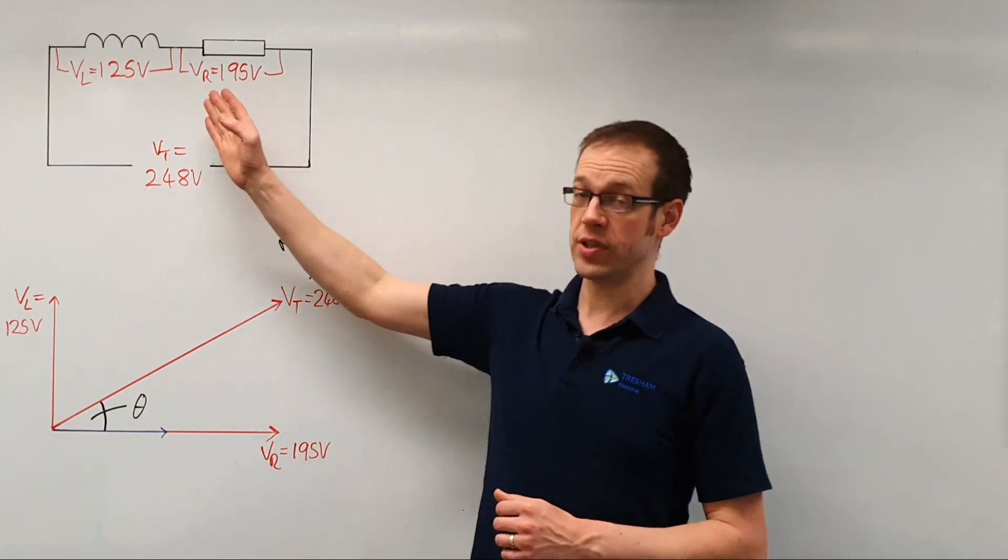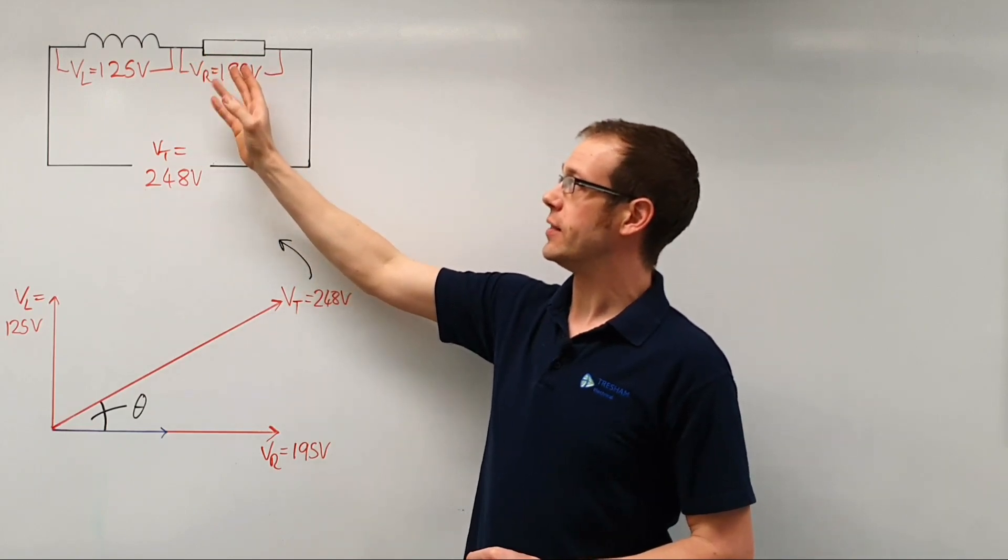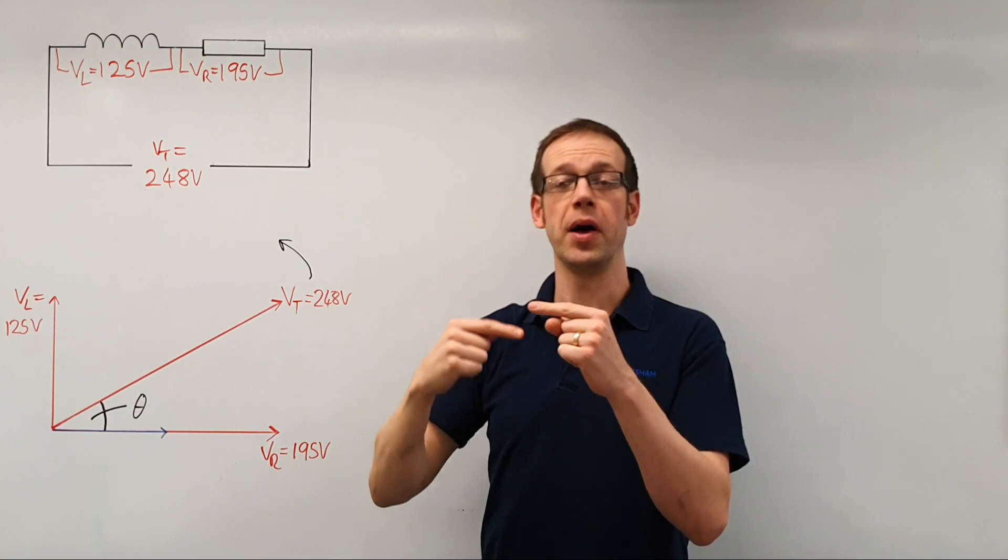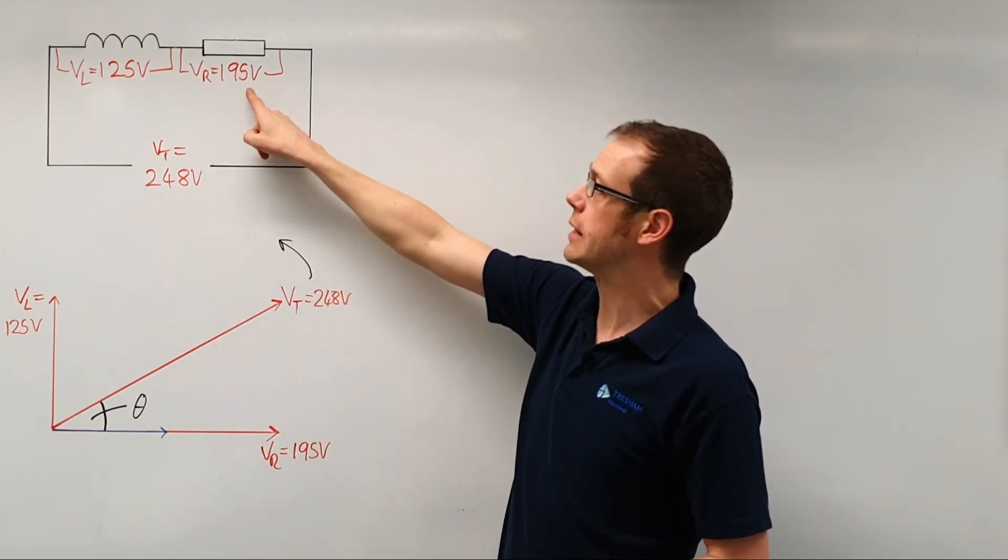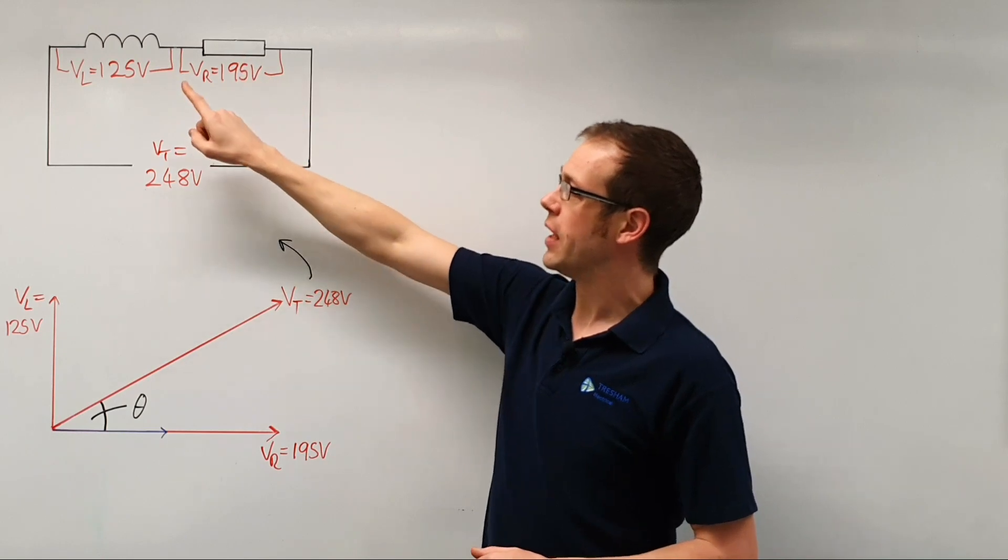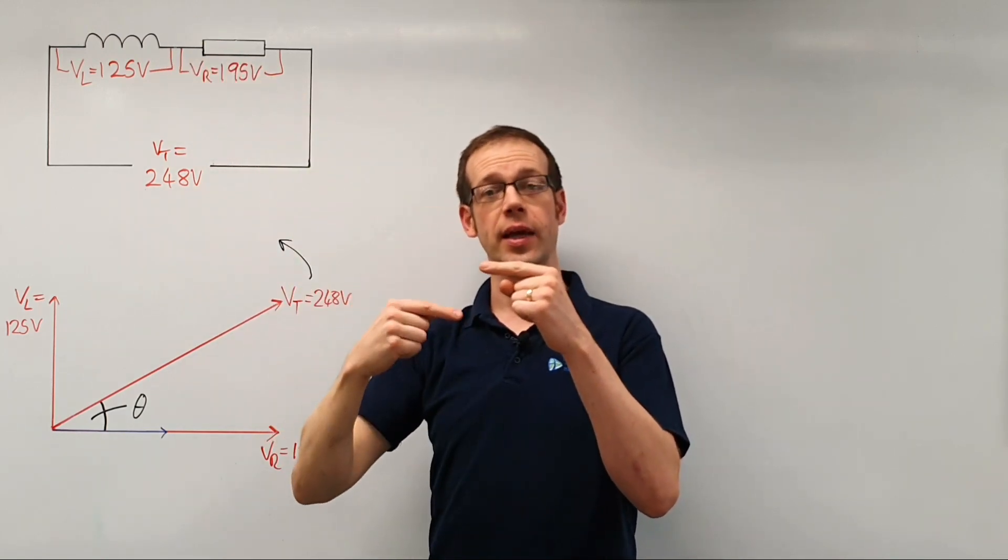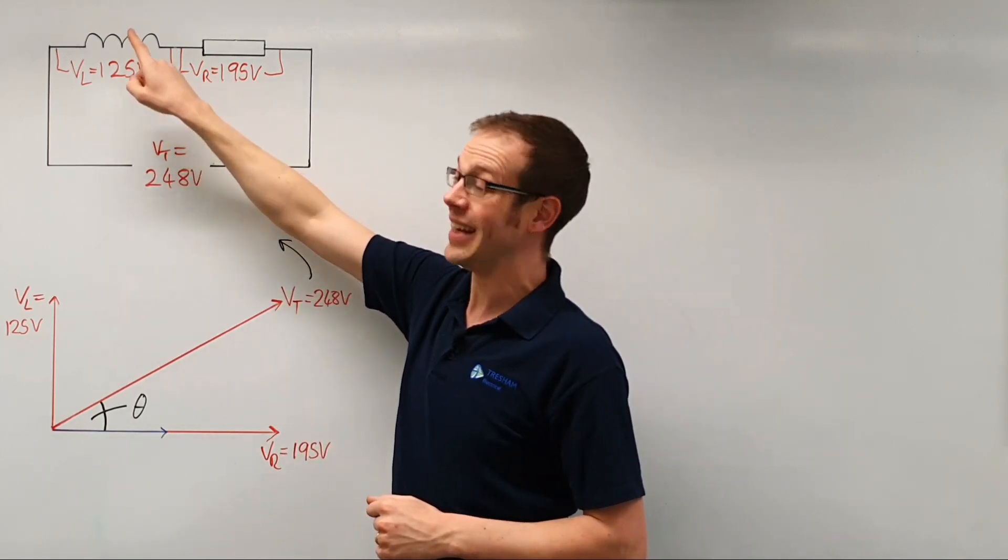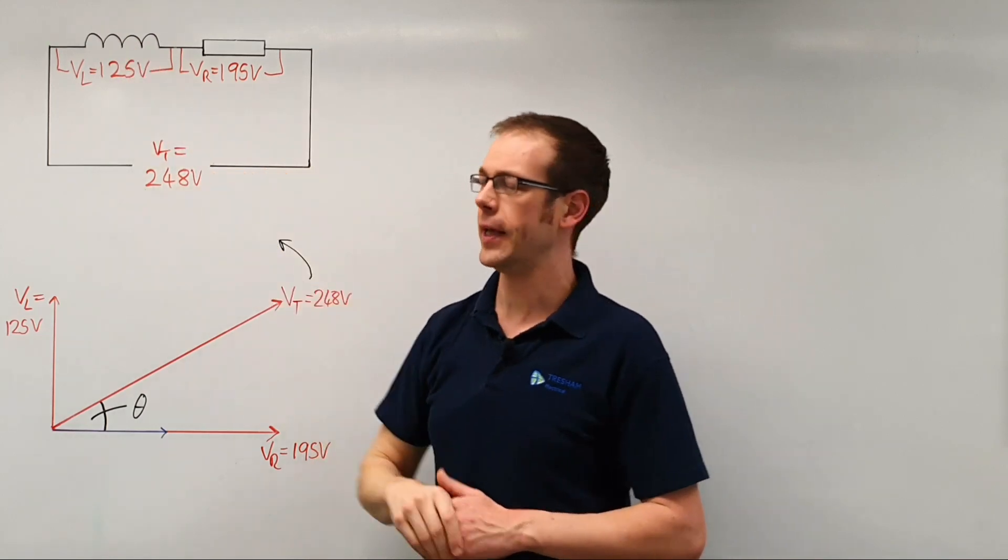So we can represent the two parts of that coil in a drawing such as this. The resistor represents the resistive part of the copper, so the copper will have a certain amount of resistance, and of course the copper is coiled into a coil, so we can represent the inductive part of a motor with the inductor symbol.